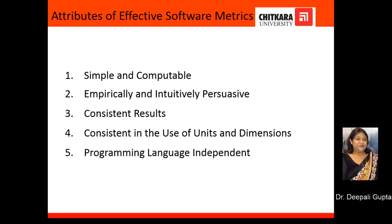In order to be effective, Software Metrics should be simple and their computation should not require inordinate time and effort. They should be empirically and intuitively persuasive — that is, they should satisfy an engineer's intuitive notion about the product attribute under consideration. It should yield consistent results, should be independent of the programming language used, and should be consistent in the use of units and dimensions.